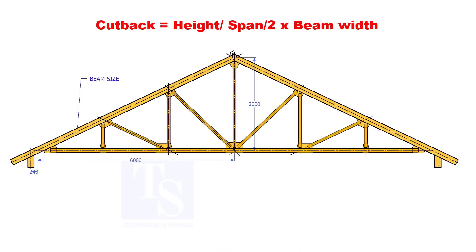Here, the cutback is truss height divided by half span multiplied by the actual width of the girder.